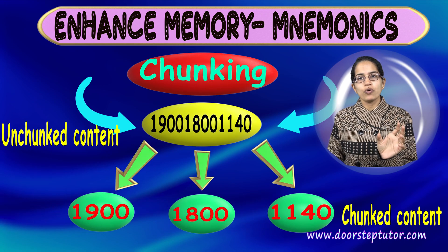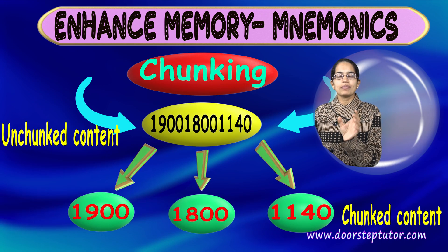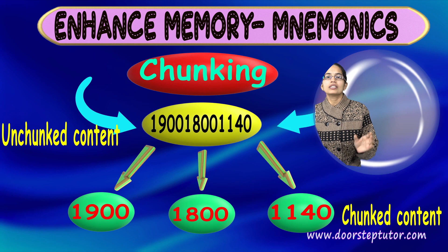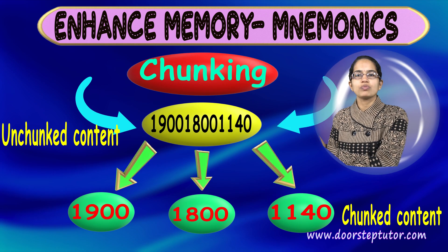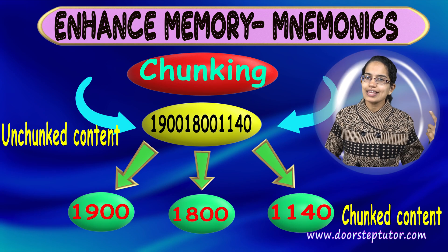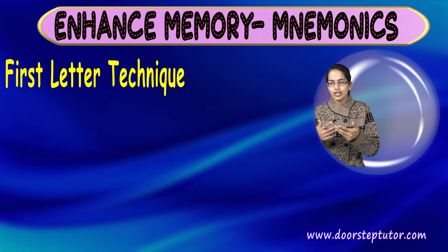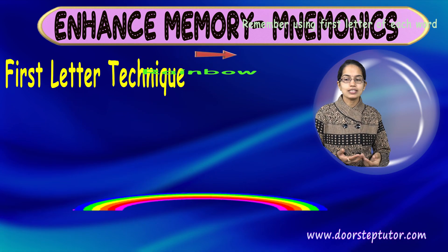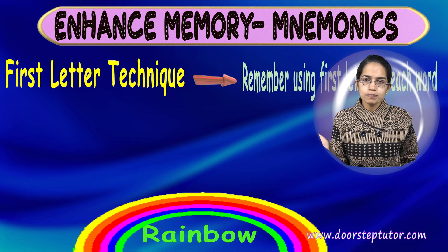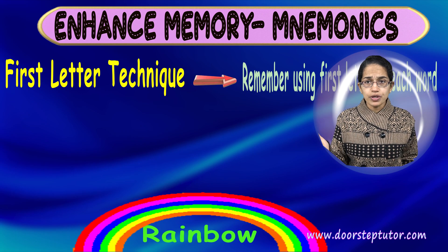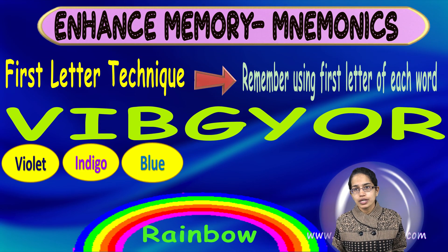By breaking the number into groups of four — like 1-9-0-0, 1-1-0-0 — we are chunking them into smaller, more manageable pieces and then remembering those. The first letter technique is another good method — for example, when you try to remember the colors of the rainbow.